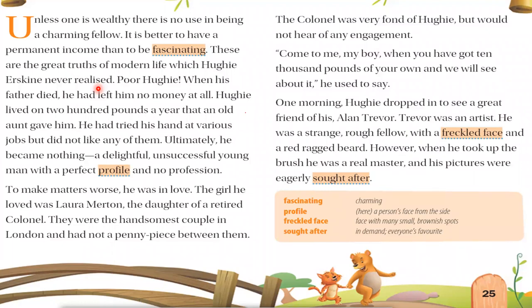When his father died, he left Hughie no money at all. Hughie lived on 200 pounds a year that an old aunt gave him — he had no legacy. That is why his aunt gave him only 200 pounds a year to survive.